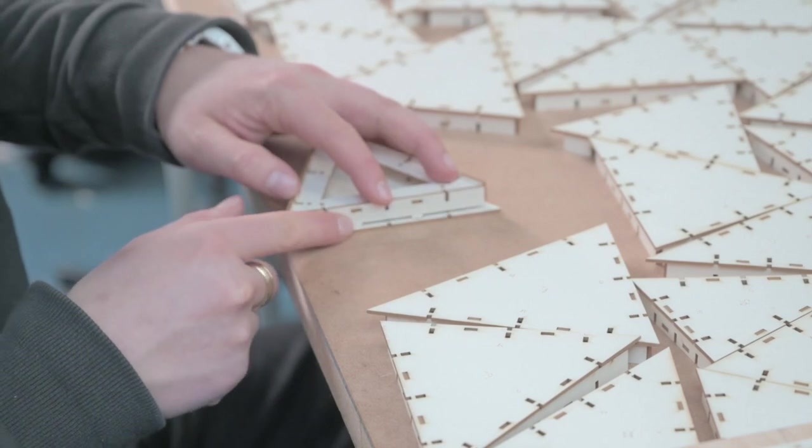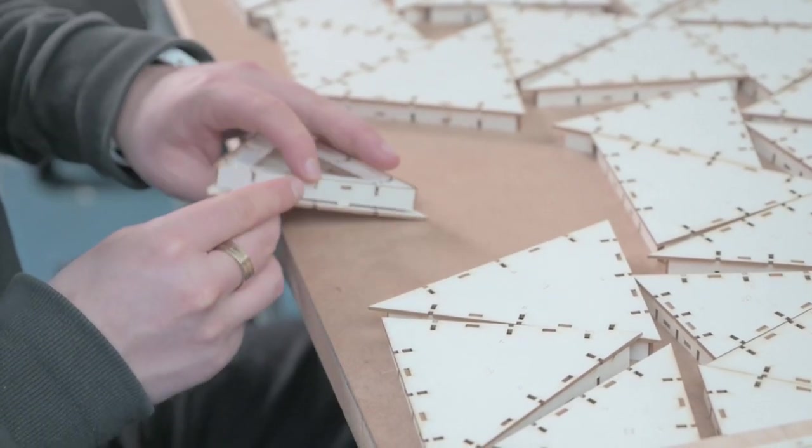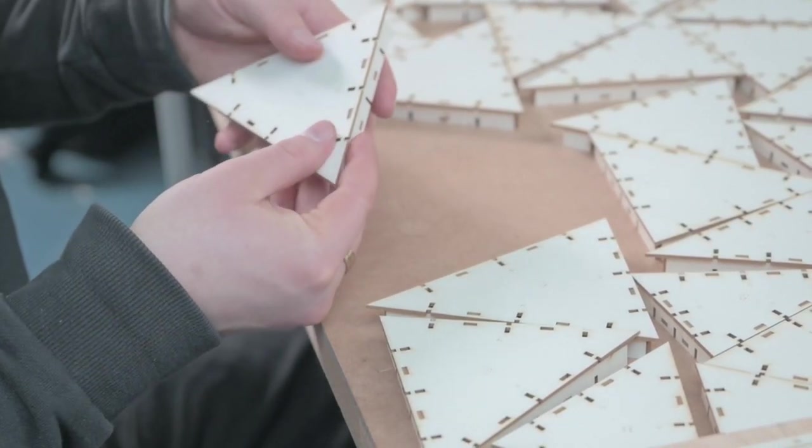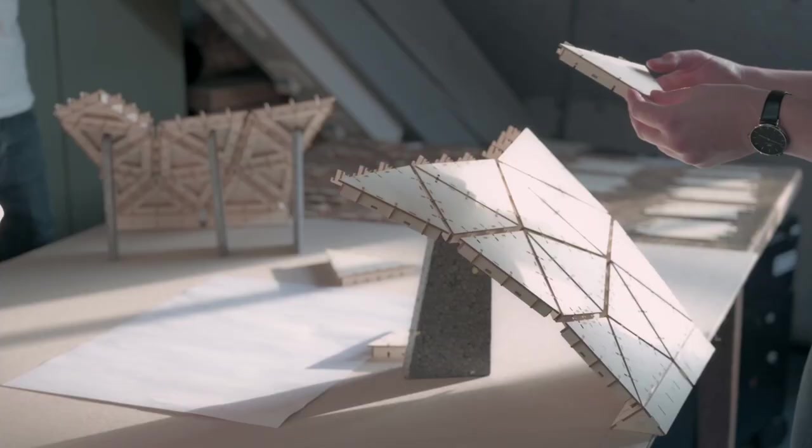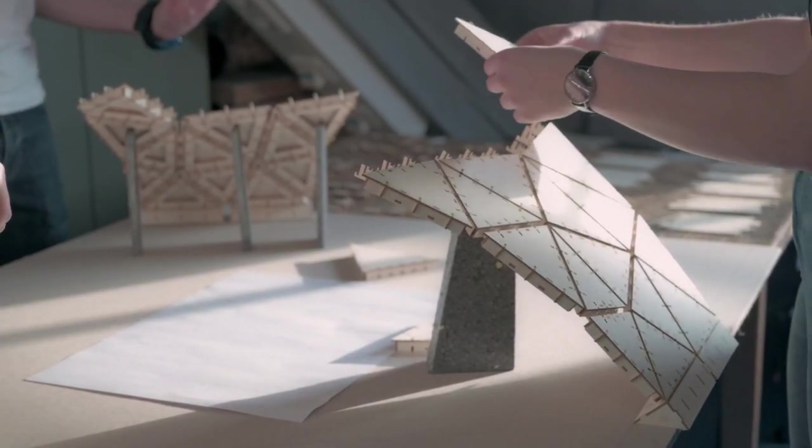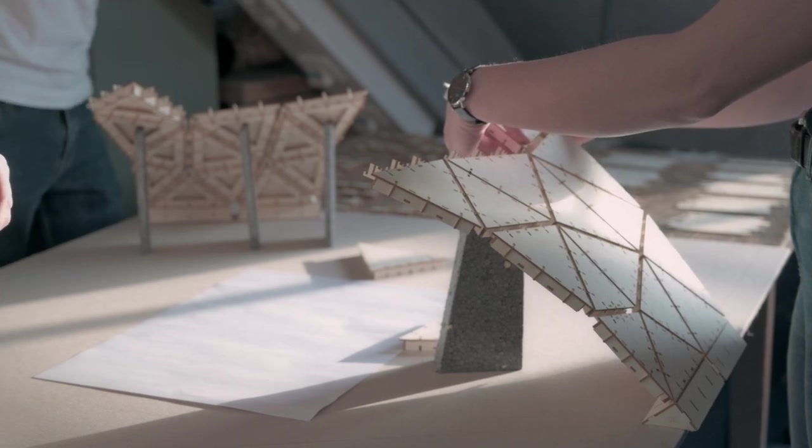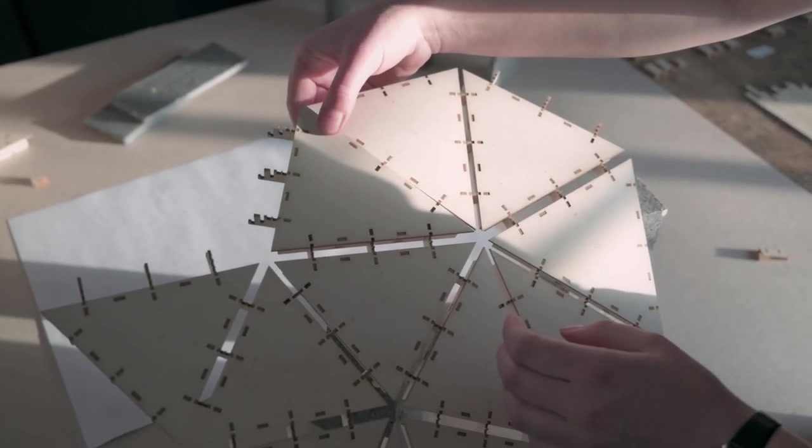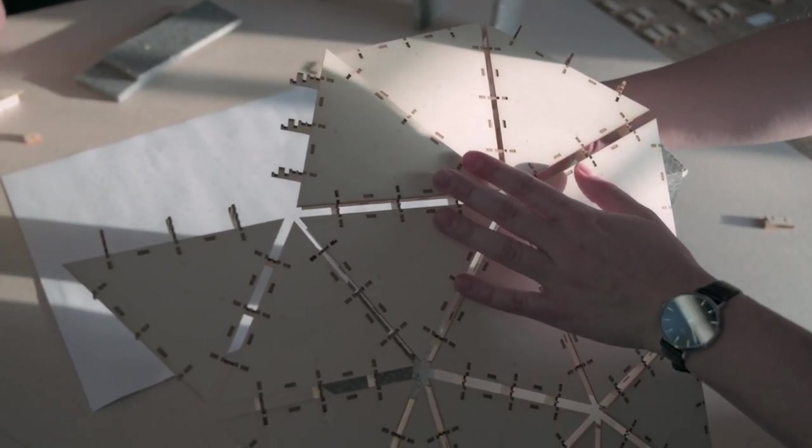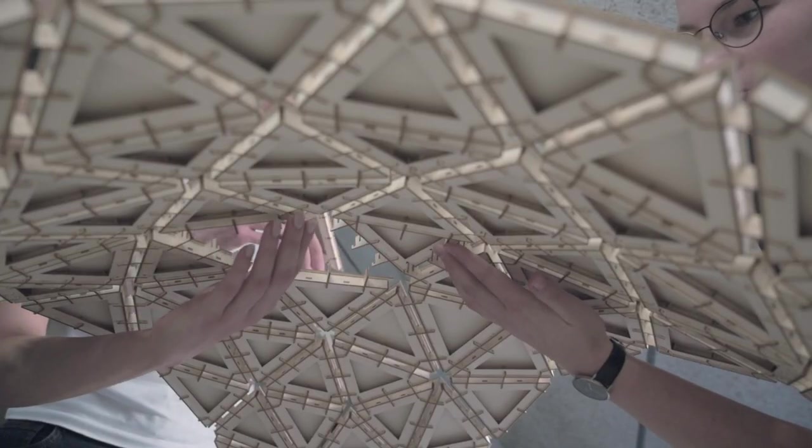You can see the number of components would never work without the labeling. You would immediately lose orientation. Already here you can see whether there might be problems in the 1 to 1 construction, and how the statics actually work in the assembly process.